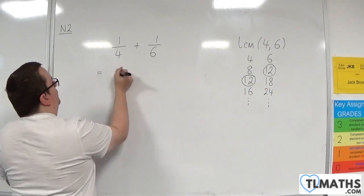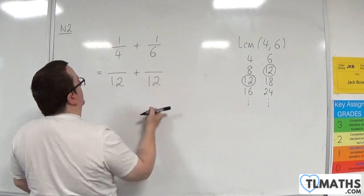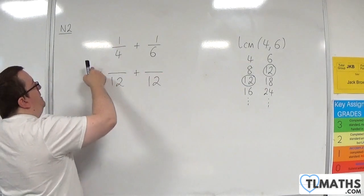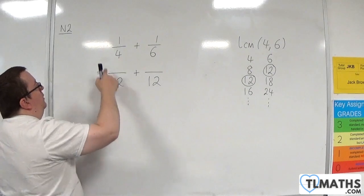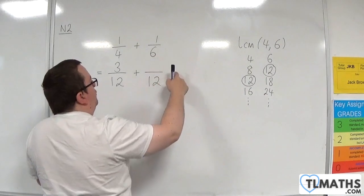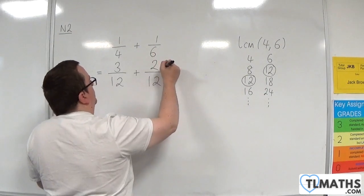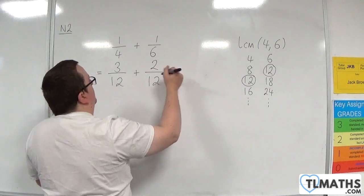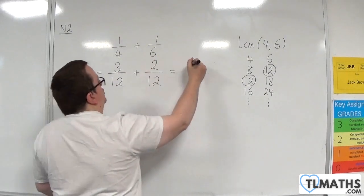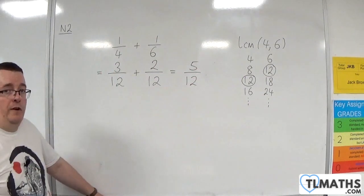So I write both of these as something over 12. Now 4 needs to be multiplied by 3 to get 12, so 1 times 3 is 3. 6 needs to be multiplied by 2 to get 12, so 1 times 2 is 2. And so we end up with 3 plus 2, which is 5, over 12. So the answer is 5 twelfths.